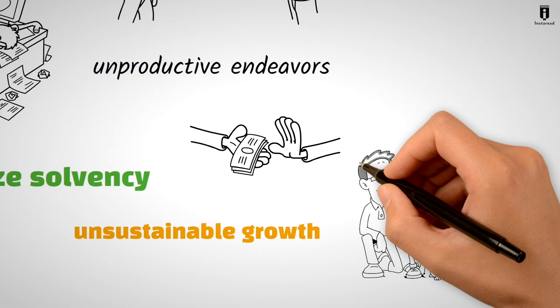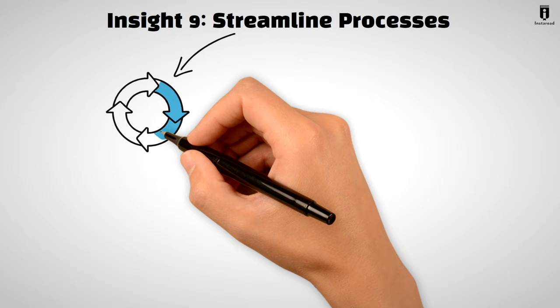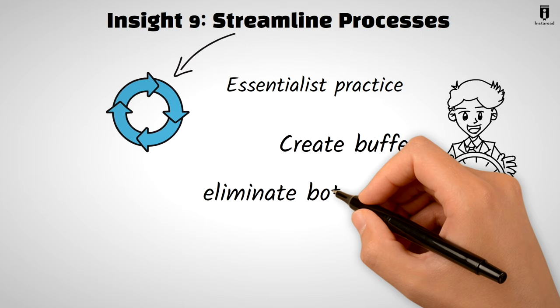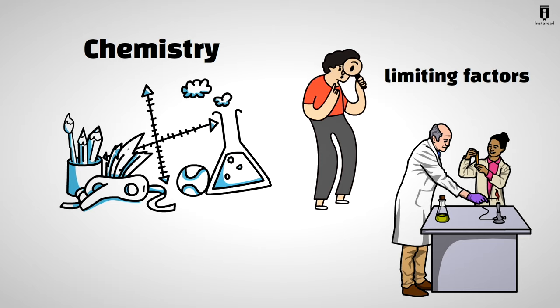Insight 9. Streamline Processes. Streamlining processes is another essentialist practice. Create buffers for time and resources, eliminate bottlenecks, and structure tasks as a series of small steps. Just like in chemistry, identifying limiting factors and optimizing processes ensures efficiency and success.